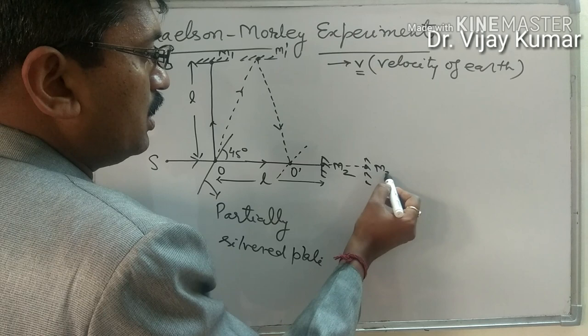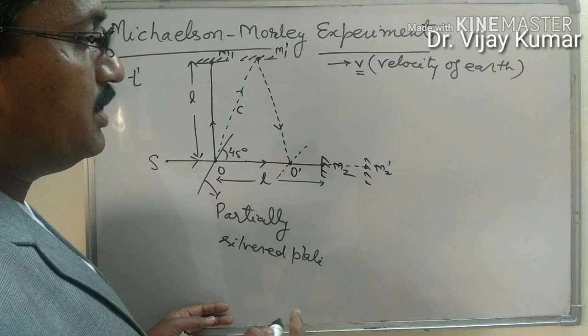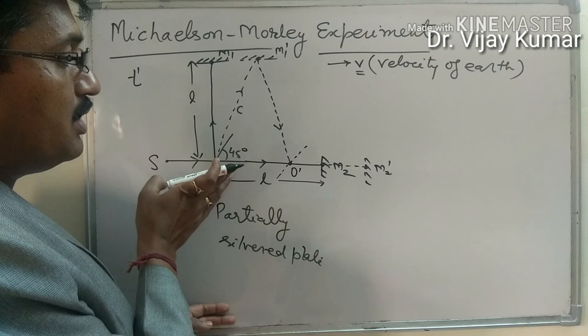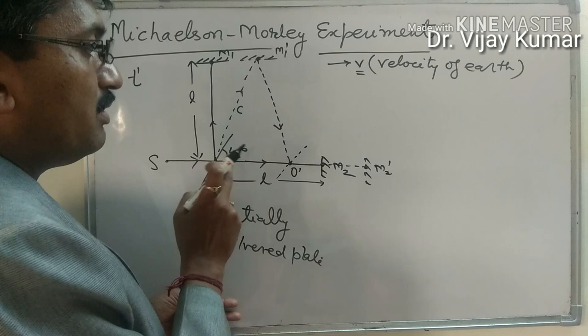Suppose the velocity of light is C and the velocity of this experiment is V. In the direction of Earth's motion, light is moving with velocity C and the experiment is moving with velocity V, and the directions of both are the same. So the velocity of light with respect to this experiment is C minus V.